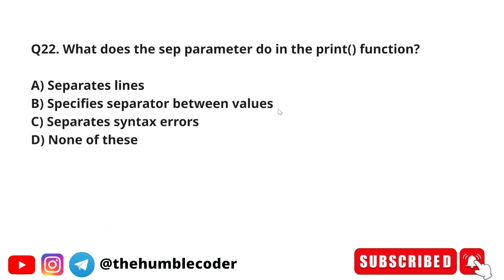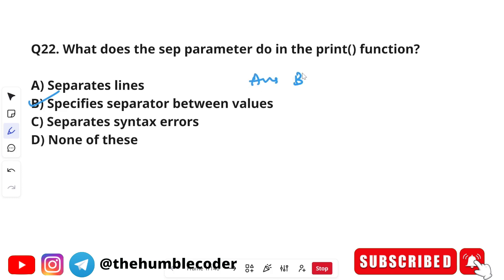Next question: what does the sep parameter do in the print function? Options are: separate lines, separator between values, separate syntax errors, and none of the above. The correct answer is option B: separator between values. The sep parameter in the print function specifies the separator between the output values.